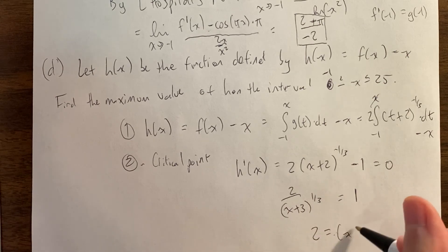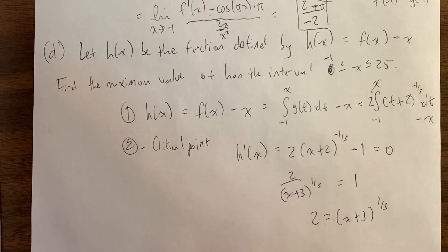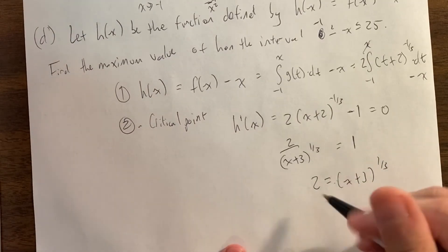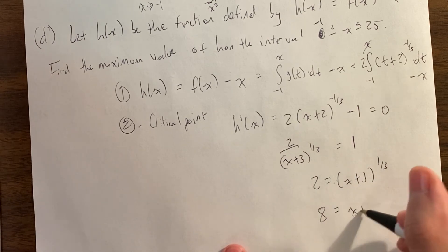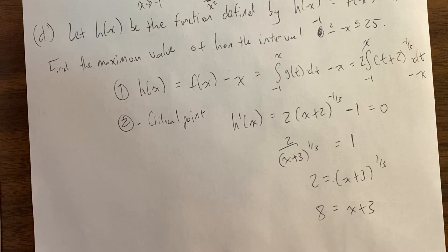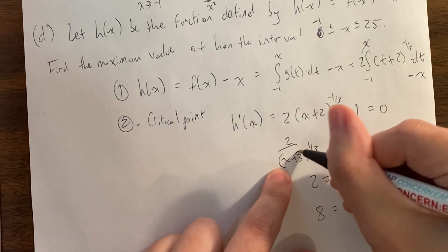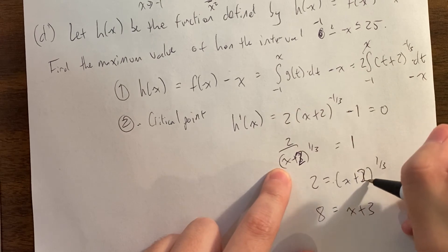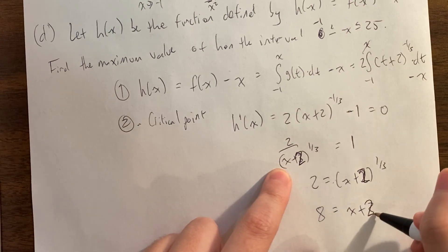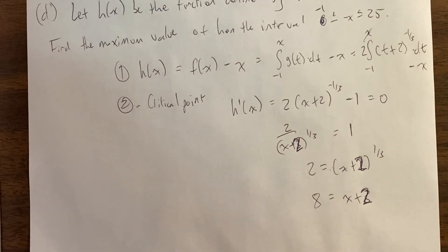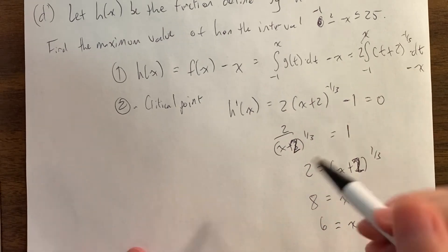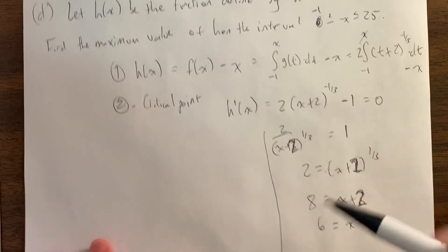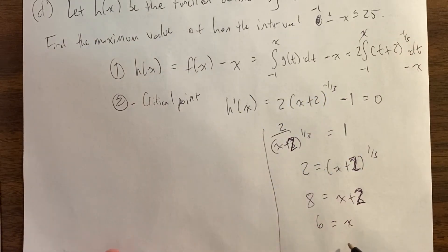Bringing the 1 over: 2 = (x+2) to the one-third. Cube everything to get rid of the cube root: 2 cubed = 8, so 8 = x + 2. Therefore x = 6. Let me be careful — I had written x+3 earlier but it should be x+2. So when we set the derivative equal to zero and solved correctly, we get x = 6.